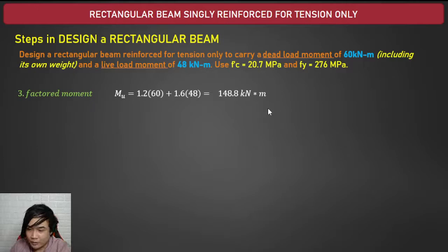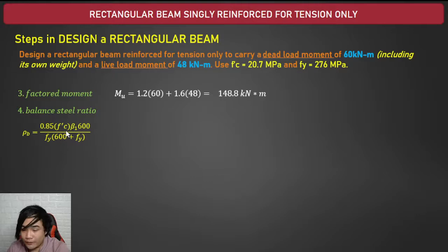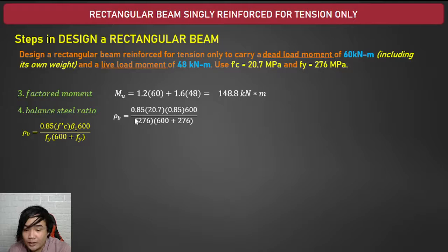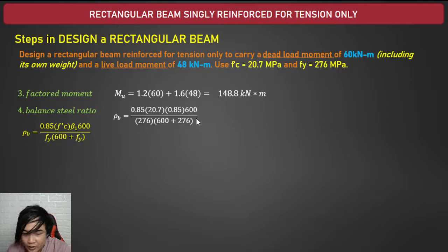Now compute the balanced steel ratio so we know the steel ratio when simultaneous failure occurs. The formula is: ρb = 0.85 f'c β1 times 600 divided by (fy)(600 + fy). Since f'c = 20.7 MPa which is less than 28 MPa, β1 = 0.85. Substituting: 0.85 times 20.7 times 0.85 times 600, divided by 276 times (600 + 276).